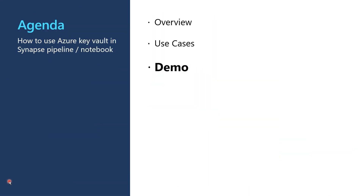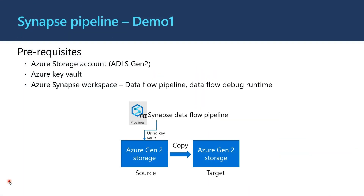Let's talk about Demo 1. I'm going to talk about how to use Azure Key Vault as part of your Synapse data flow pipeline. The use case is: I have set up a Synapse data flow pipeline which is copying data from one Data Lake Storage account to another storage account. This Synapse data flow pipeline accesses the Data Lake Storage source using storage account keys stored in Azure Key Vault.